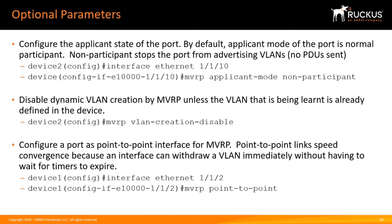Under the interface, we have applicant mode. By default, the applicant mode is set to normal. When we set it to non-participant, it stops the port from advertising any VLANs — it stops it from sending PDUs. It will still build those VLANs, but it's not going to advertise them out. So if we don't want to advertise from the core outward, we can set the applicant mode on that interface to non-participant. It will still receive VLANs from upstream, but it's not going to advertise any downstream.